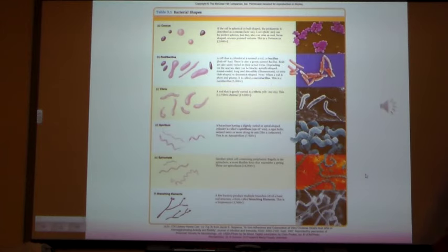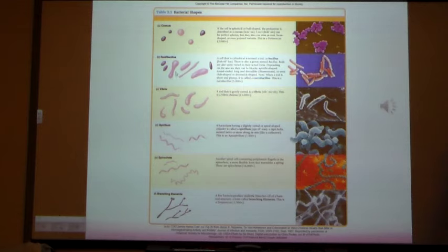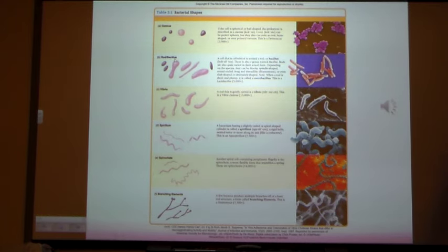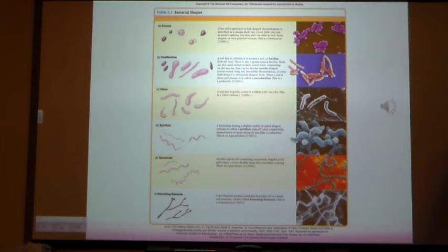When we describe bacteria, there are two basic shapes you hear all the time: the coccus shape, which means round, versus the bacillus shape, which means rod-shaped. Coccus — as in streptococcus and staphylococcus — refers to the round shape; under a microscope they look like tiny little dots. Rod-shaped bacteria are called bacillus or bacilli. The plural of coccus is cocci.